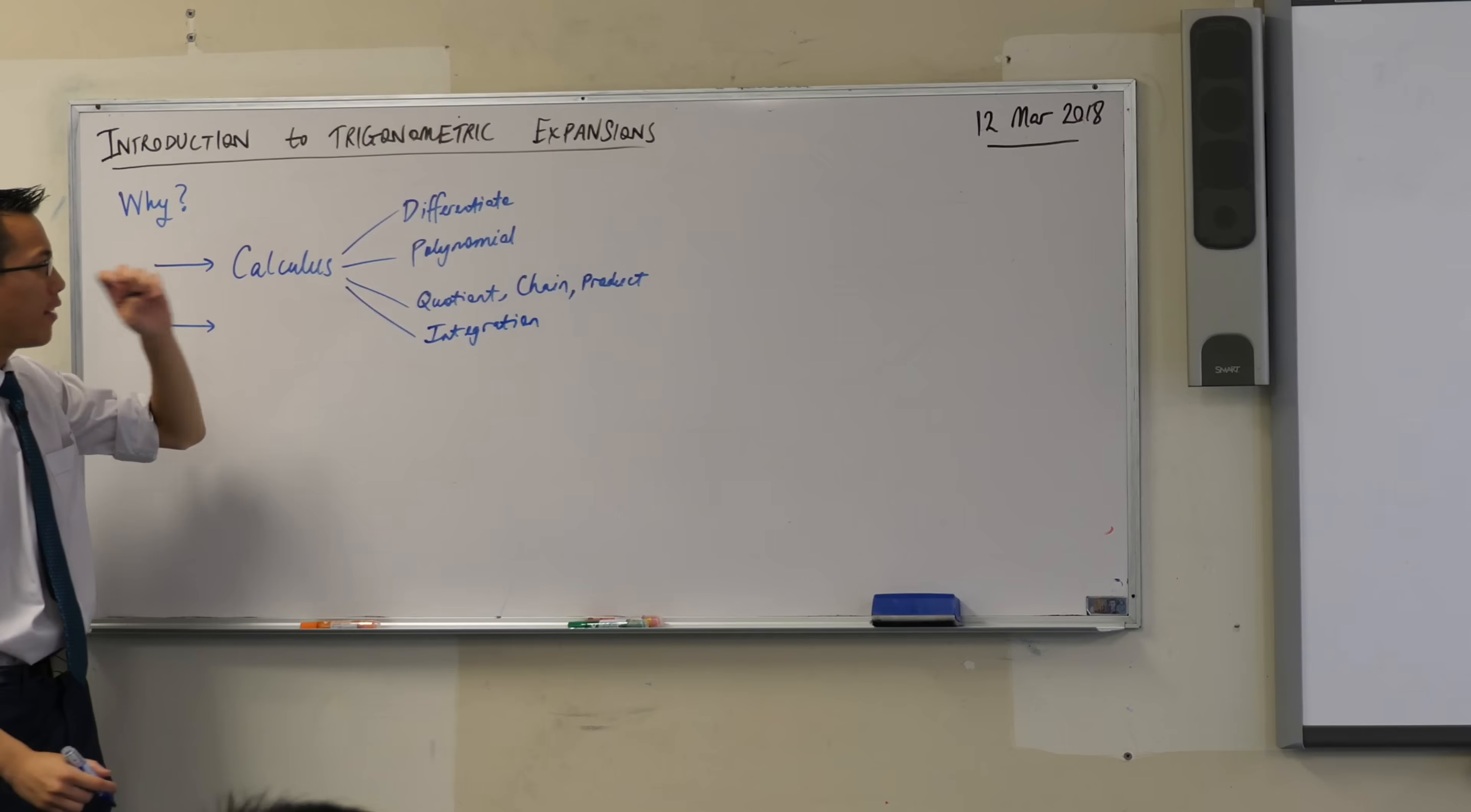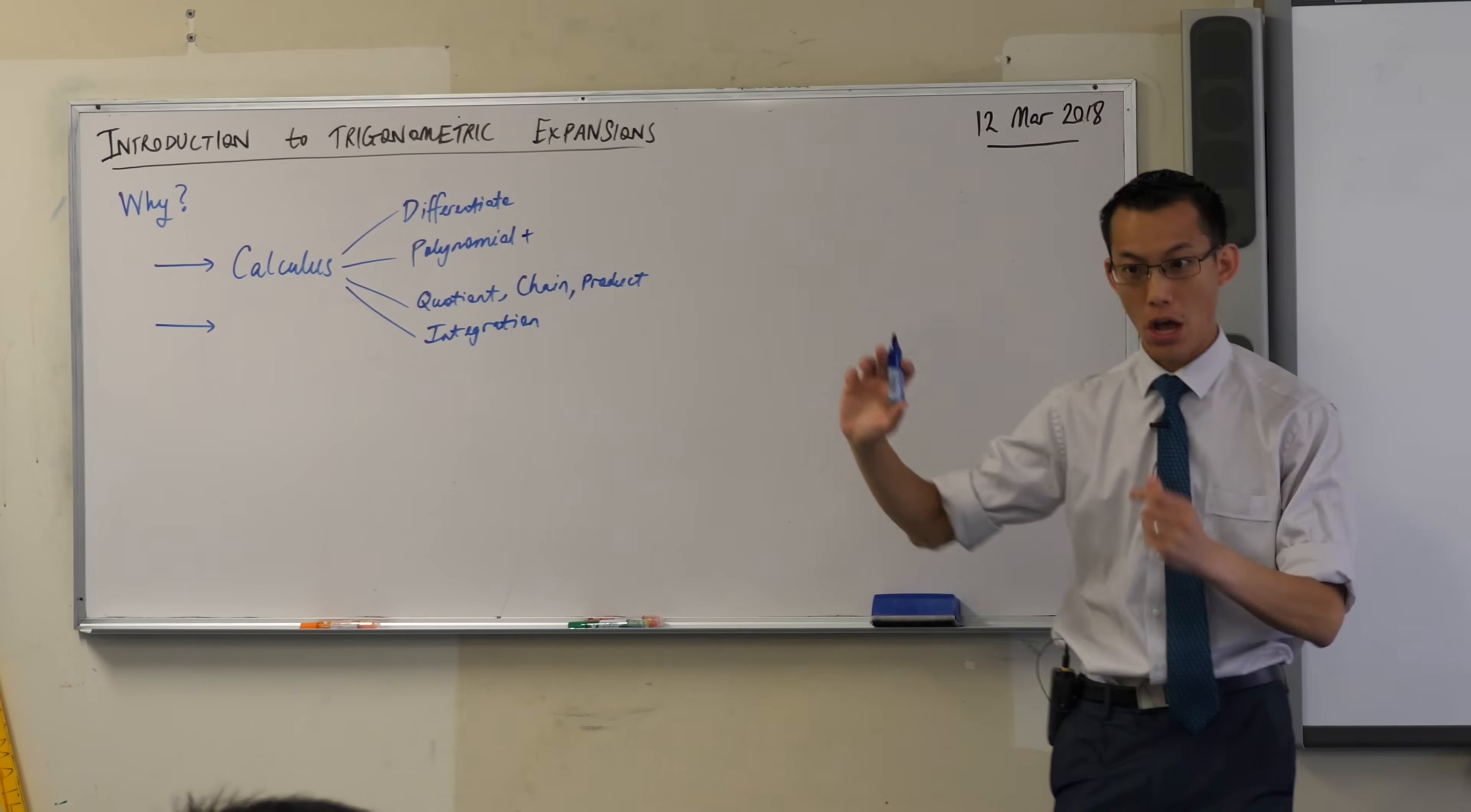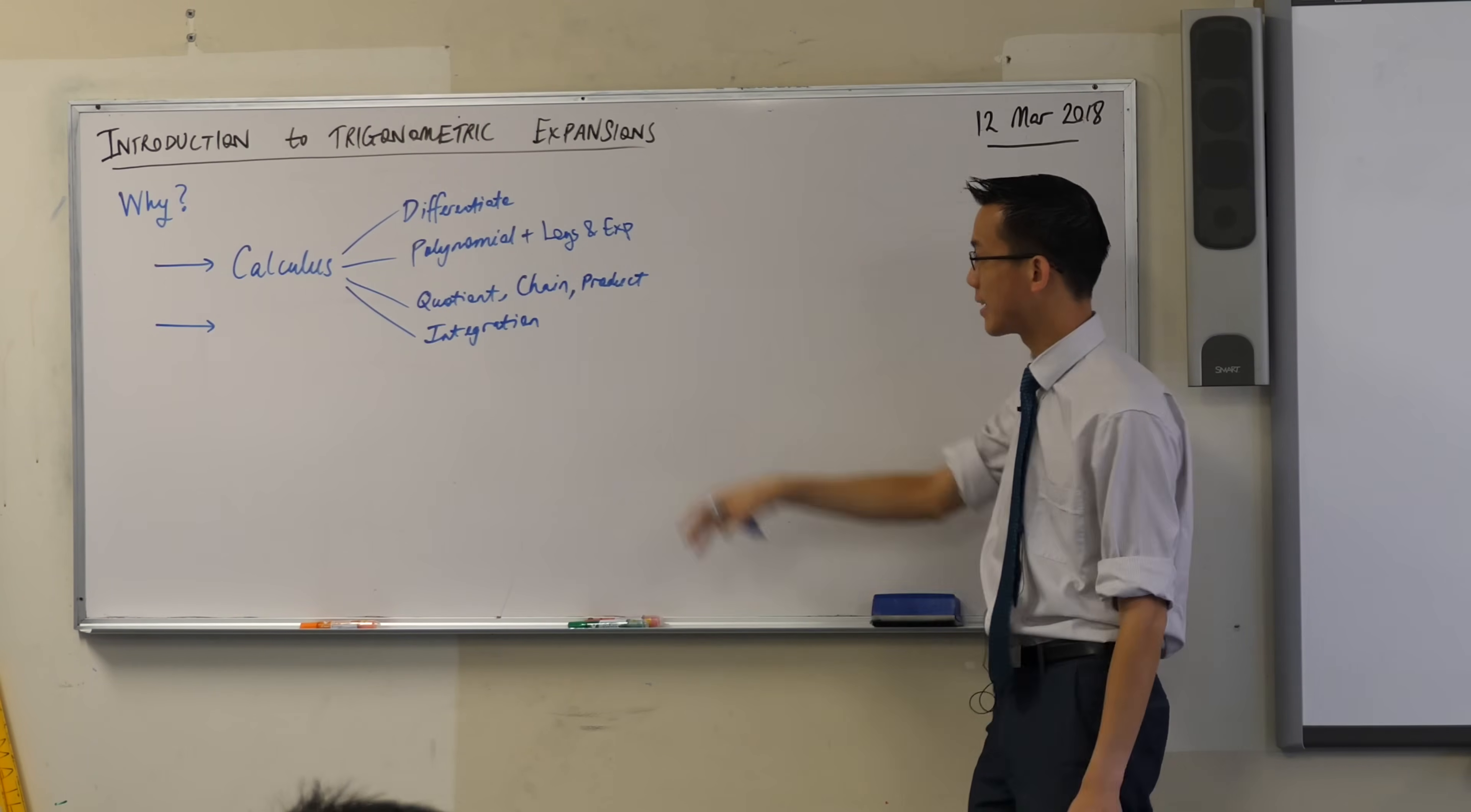And then after we sort of covered that, we're like, well, we know how to do lots of things now. We're kind of running out of space in polynomial land. So we learned how to deal with a whole different family of functions. Do you remember what was earlier this term? What did we introduce? Logs and exponentials. So I'm putting that up here because you learned how to do all of these other things: differentiation, quotient, chain, product, and integration. You've learned how to do them with logs and exponentials as well.